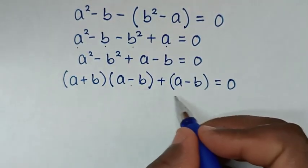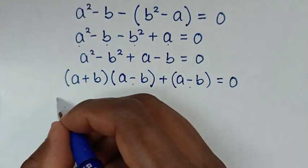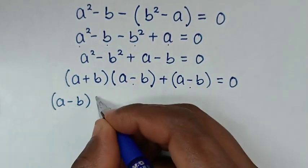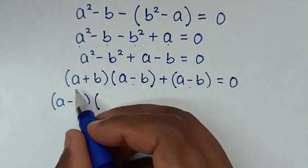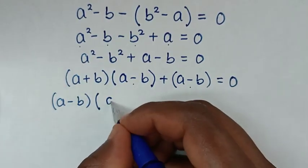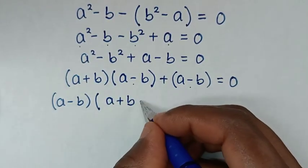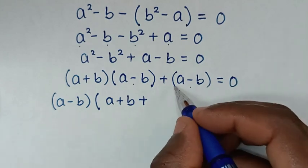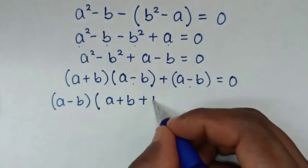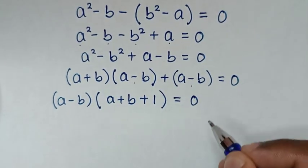From here, a squared minus b squared is in the form of a difference of squares. So this is the same as (a plus b)(a minus b), then plus (a minus b), is equal to 0. Then a minus b is common, so we factor out (a minus b) giving (a minus b)(a plus b plus 1) equals 0.